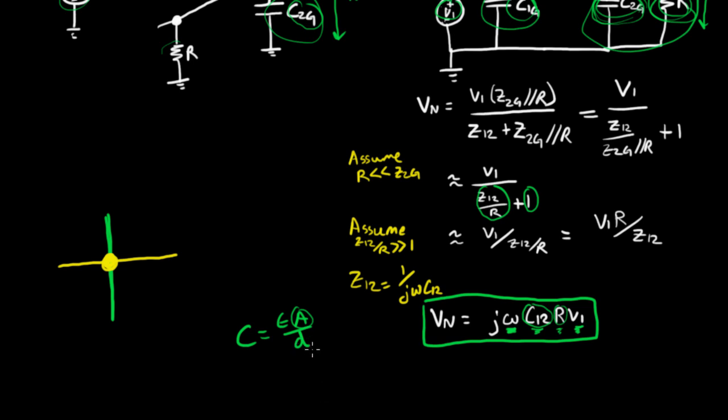Another thing you can do is just physically separate your two circuits, and that would be equivalent to increasing the distance between them. And that will lower the capacitance and lower this noise voltage expression. The final thing you can do is put a shield between them so that there is no capacitive coupling, but you have to be careful about how you do that.